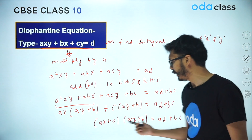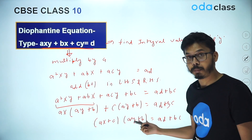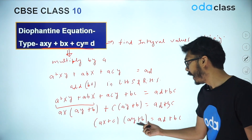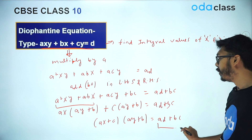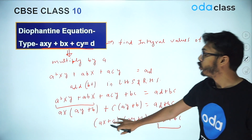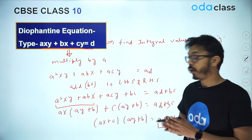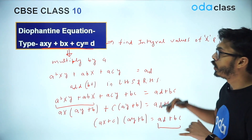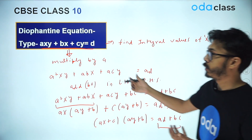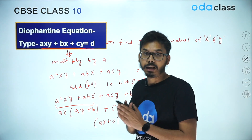This whole thing will become (AX + C)(AY + B) equal to AD plus BC. Now you have two factors multiplied together equal to a number, and you can work on the integral solutions of X and Y. This is how you solve this particular type of Diophantine equation.